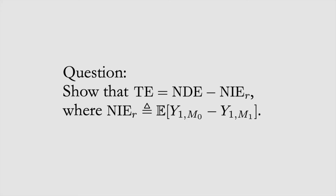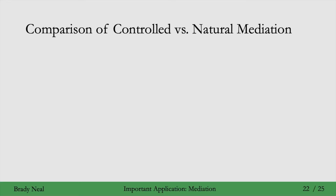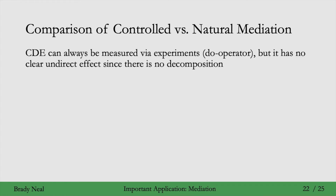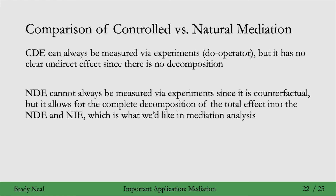That brings us to our next question: show that the total effect decomposes as the natural direct effect minus the natural indirect effect in the reverse direction. It's worth recapping the strengths and weaknesses of controlled direct effects versus natural direct effects. The great thing about controlled direct effects is that they can always be measured via experiments using just the do operator — no counterfactuals needed. But there's no clear indirect effect and no decomposition of the total effect. Whereas with natural direct effects, they can't always be measured via experiments since they're counterfactual, but they allow for the complete decomposition of the total effect into the natural direct effect and natural indirect effect, which is very important in mediation analysis — we want to attribute what percentage of the total effect is going through a specific mediator.